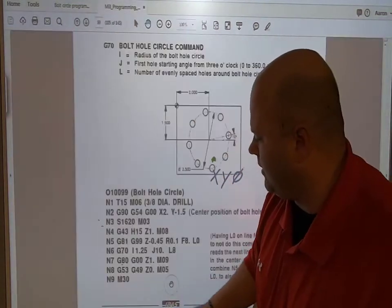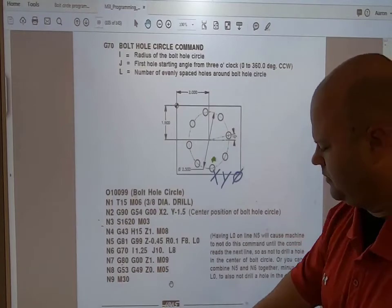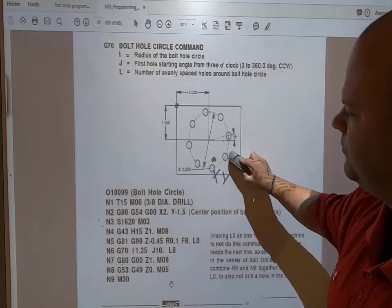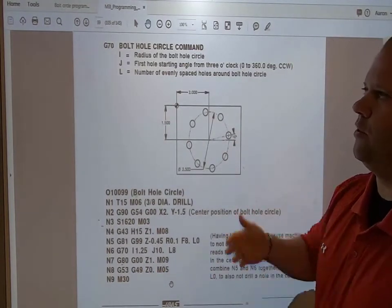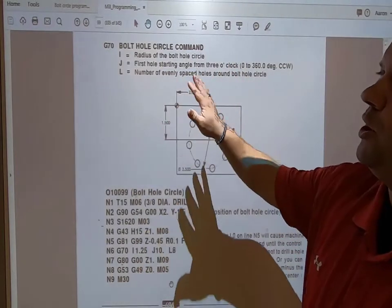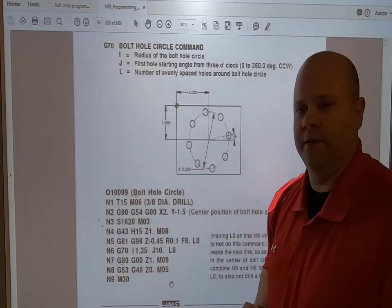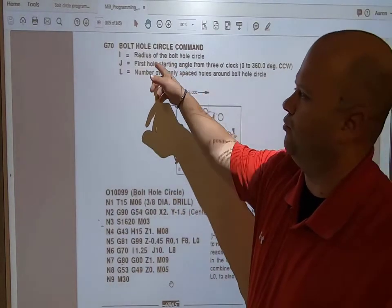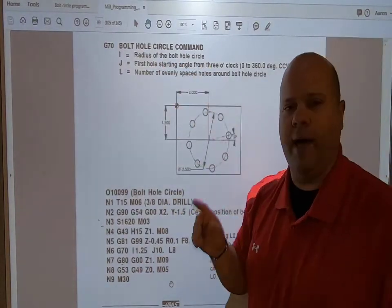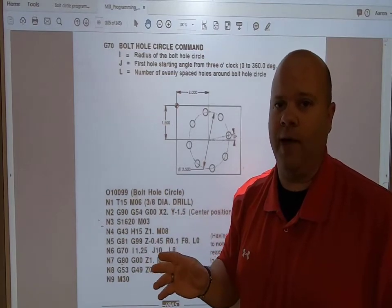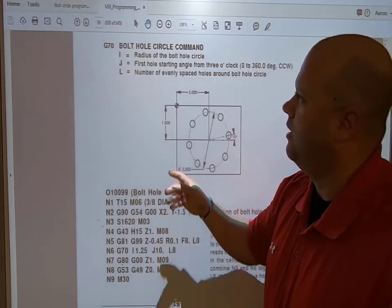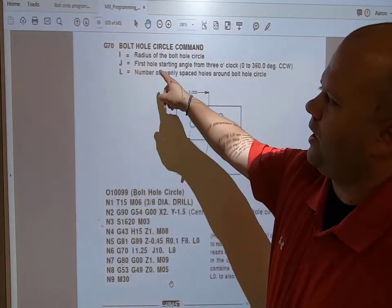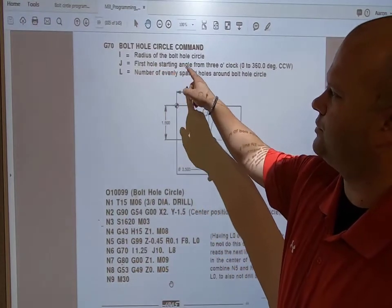This is a G70 bolt hole circle command. I is the radius of the bolt hole circle, that 1.5 - one inch, 500 thousandths.